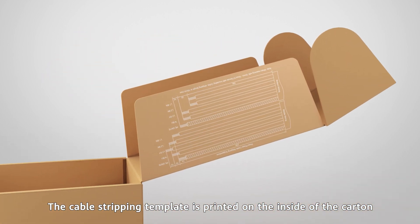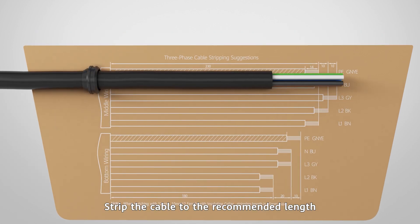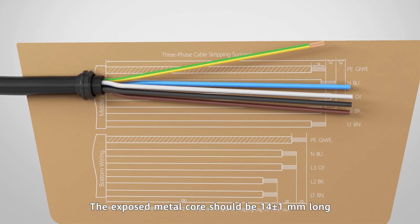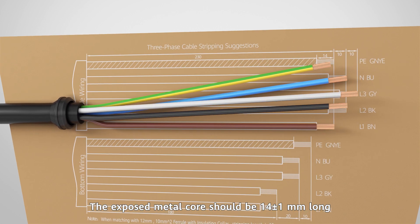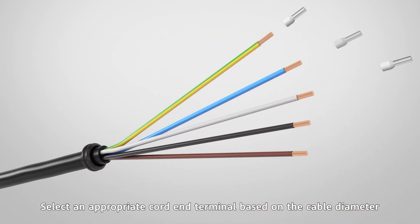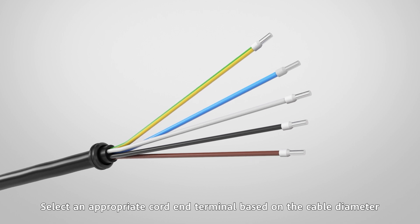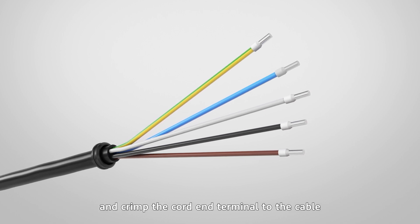The exposed metal core should be 14 plus or minus 1 millimeters long. Select an appropriate cord and terminal based on the cable diameter and crimp the cord and terminal to the cable.